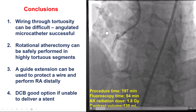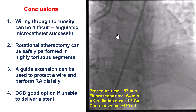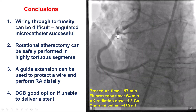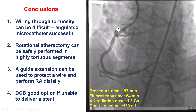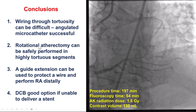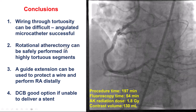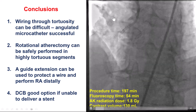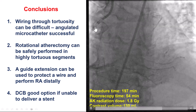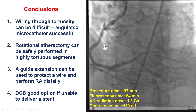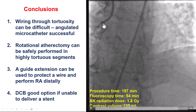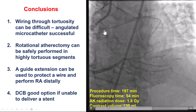Multiple lessons from this case. First, wiring through tortuosity can be challenging, and an angulated microcatheter — the Venture in our case — was successful in directing a Sion Black polymer-jacketed wire into the anomalous circumflex. Second, it's not only wiring that is difficult but also delivering equipment; when a lesion is uncrossable, rotational atherectomy can provide the solution. We used a guide extension to protect the right coronary artery wire, then performed several passes of rotational atherectomy into the anomalous circumflex. Finally, we used a drug-coated balloon since we were unable to deliver a stent, and despite the circumflex being jailed by a drug-eluting stent, we achieved a nice final result. Thank you.